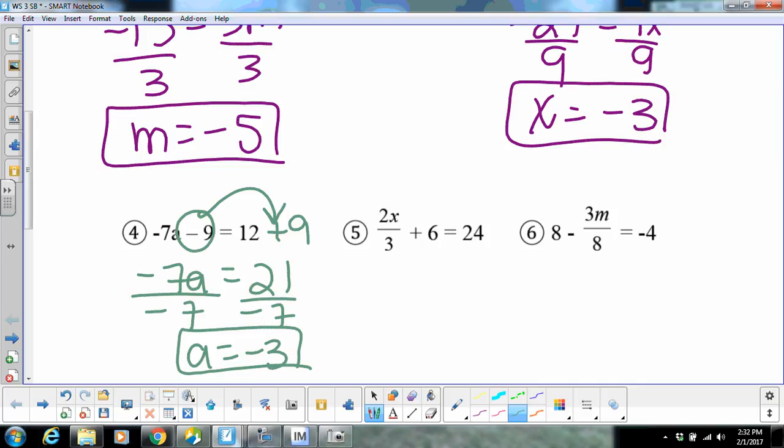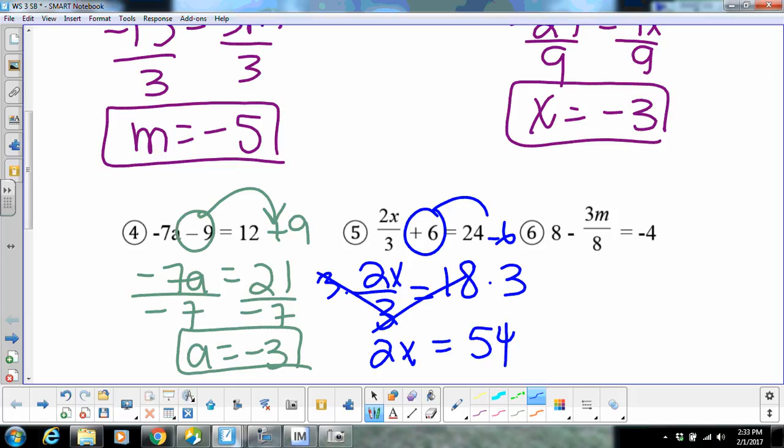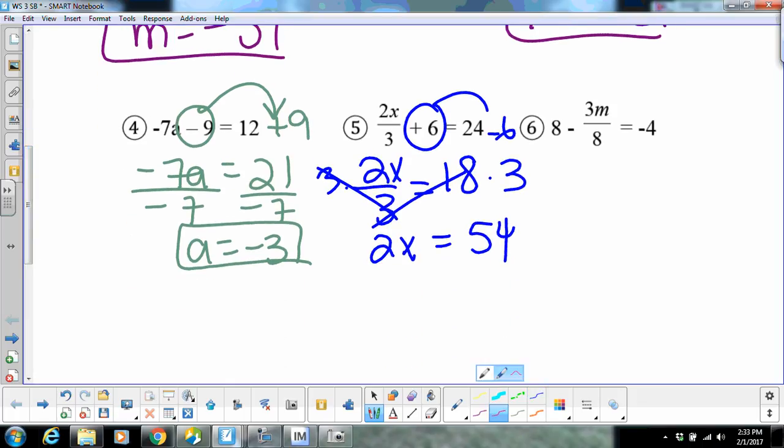Alright, I did number five in class with you today, but I'm going to do that one again just in case somebody did not get that. You would move your six, you would multiply by three. So that's going to give us 2x equals 54, and then your last step here is going to be to divide by 2, making x equal 27.